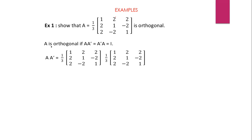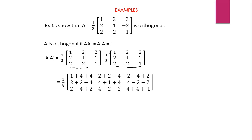The definition says A is orthogonal if A into A dash equals the identity matrix. We have matrix A, and this is the transpose of A — where rows are written as columns: first row becomes first column, second row becomes second column, and third row becomes third column. The product has scalar factor 1 by 3 times 1 by 3, which is 1 by 9. The first row multiplied to the first column gives 1 plus 4 plus 4. First row to the second column gives 2 plus 2 minus 4.